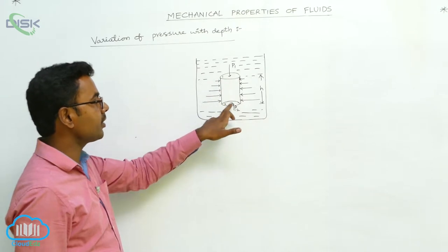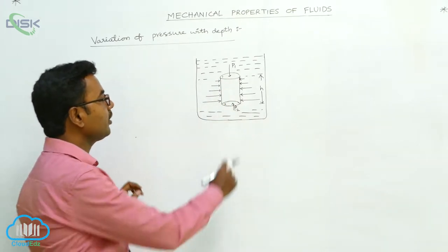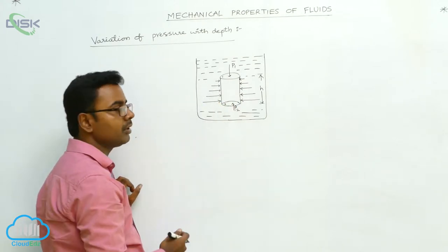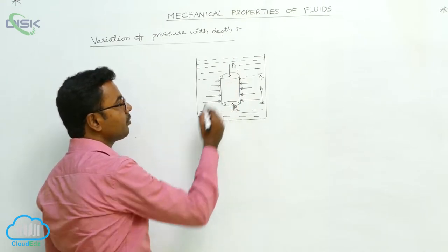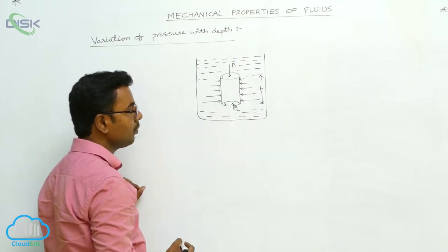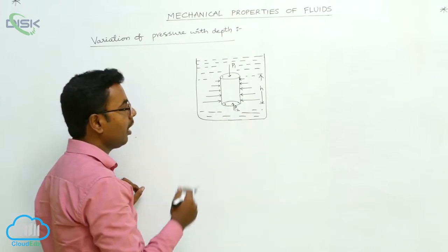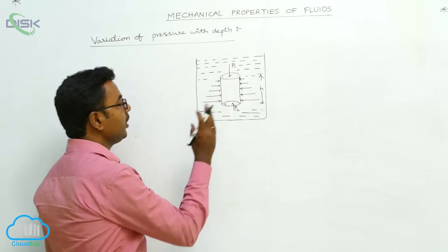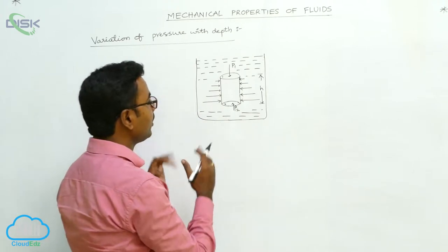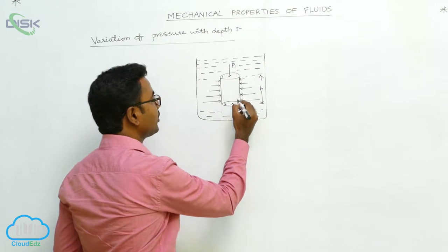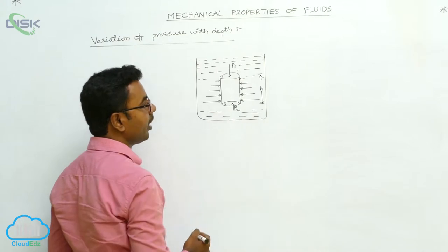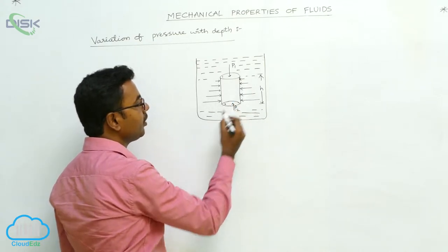This is surface 1 and this is surface 2. On this cylindrical part, there is pressure due to the fluid in all directions, which is perpendicular to the surface of the cylinder. On the top surface 1, the pressure is P1 which acts in the downward direction. On the bottom surface 2, the pressure acting is P2 which acts in the upward direction. The curved surface of the cylinder also experiences pressure, but it is equal in all directions and cancels out.